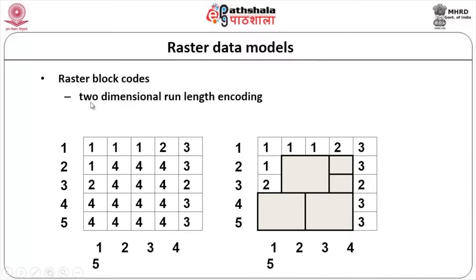The same context is block coding, otherwise known as two-dimensional run length encoding. In block coding, a block is nothing but a square block. This is one block. Unfortunately if it is only one cell, it is only one separate block. Separate areas will each form one block. Any number of square grids can be there within this one — that is your block coding.